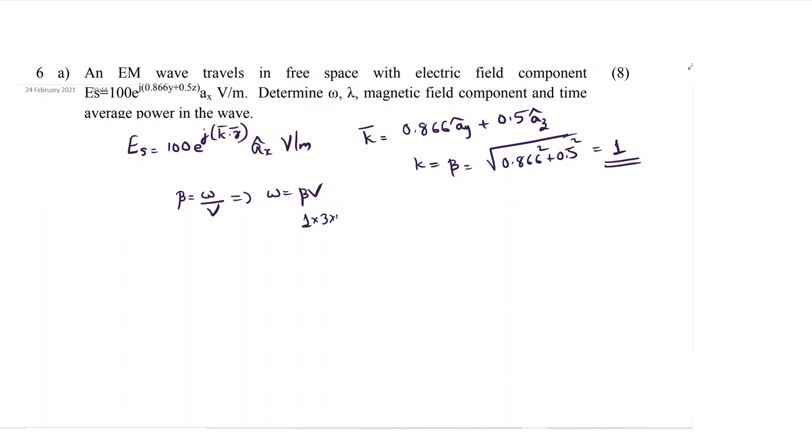Beta is 1, 1 into 3 into 10 raised to 8. Omega that will be radians per second. Omega value will be 3 into 10 raised to 8 radians per second. You got omega.